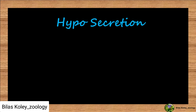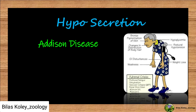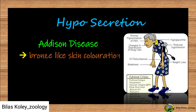Hyposecretion of mineralocorticoids leads to Addison's disease, characterized by bronze-like skin color, hyponatremia, hypokalemia, low blood sugar, excretion of sodium and water in urine, dehydration, nervous depression, nausea, vomiting, weakness, low blood pressure, and diarrhea.